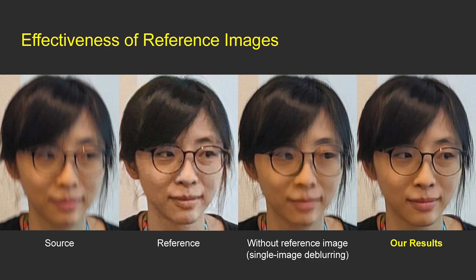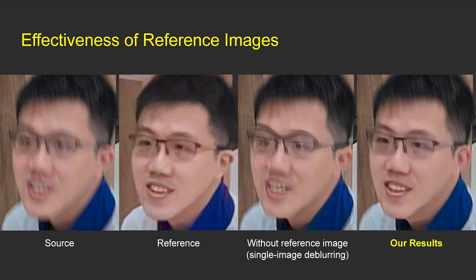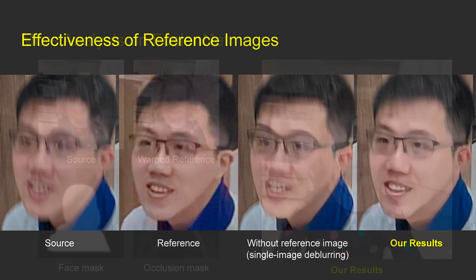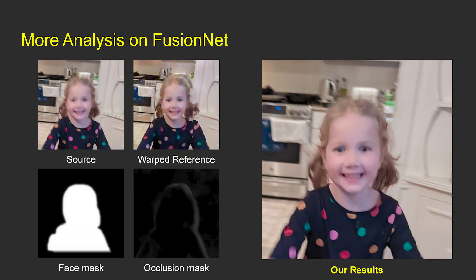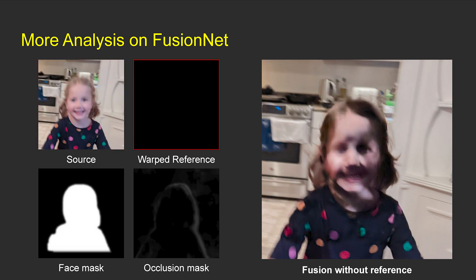To understand the effectiveness of the reference image, we train our fusion net without using reference images, where the network learns single-image de-blurring. Without the reference image, the model cannot remove large motion blur and often leaves undesirable visual artifacts. One may question whether our fusion net just learns to copy all the details from the reference to source. When we set the source image to zeros, the result looks all black without any facial details — if fusion net just learned copying, we should see the output look the same as the reference. When we set the reference to zeros, the fusion result shows an unnatural face rather than all black, confirming that our fusion net does not blindly copy from the reference. Instead, it learns the correspondences between source and reference and applies fusion accordingly.